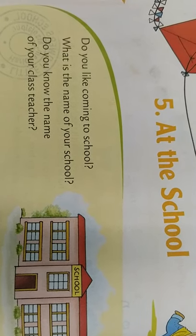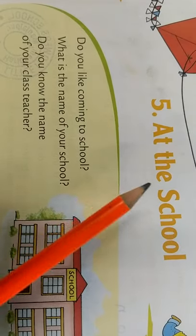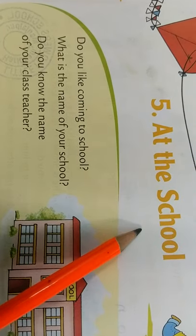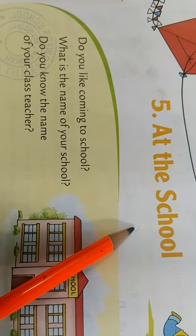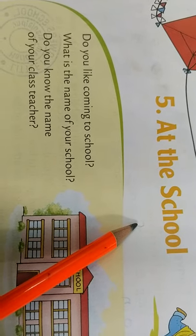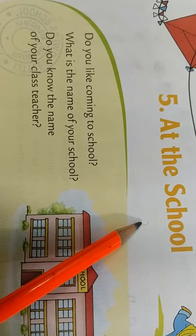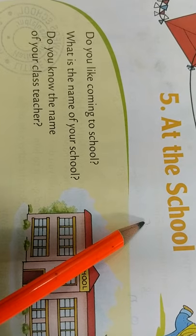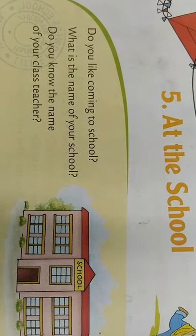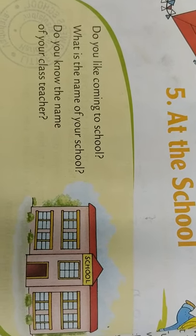Students, today in English Tulip, we will study lesson number 5 'At the School'. In the last period, I taught you this lesson. I explained it and we have done the fill in the blanks, true or false exercise, and other exercises also. So today we will do the question answers exercise.